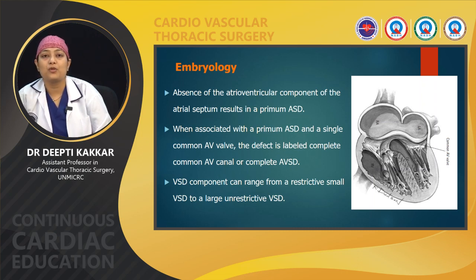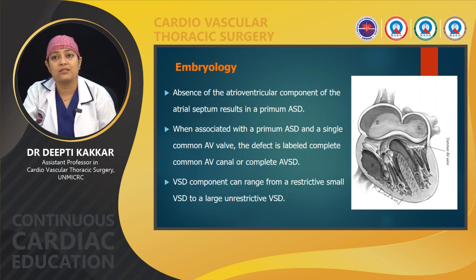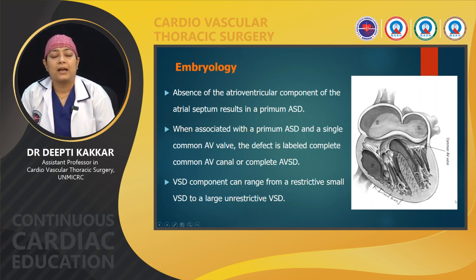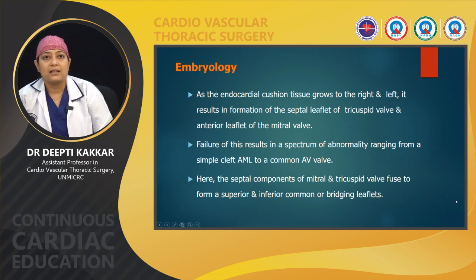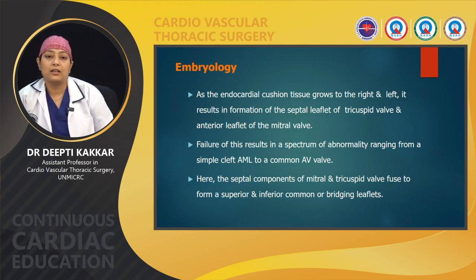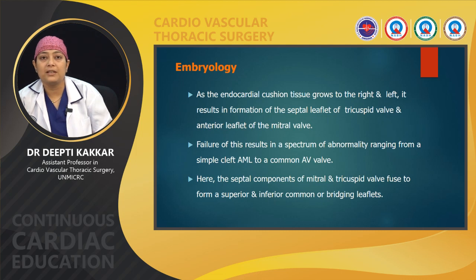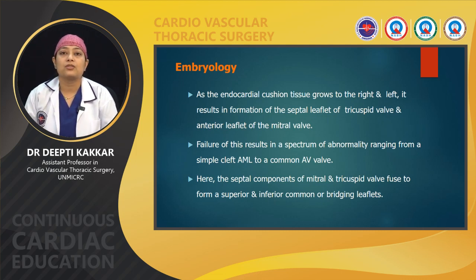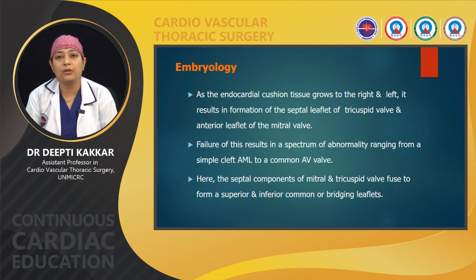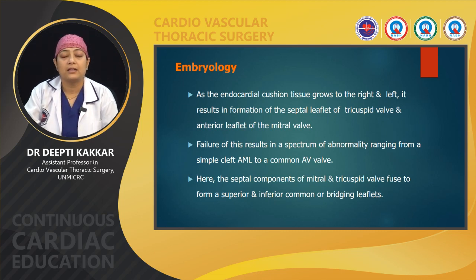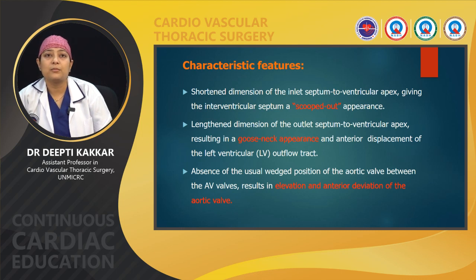The VSD component of AVCD can vary from a small restrictive VSD to a large unrestrictive VSD. As the endocardial cushion grows towards the right and left, it also results in the formation of the right and left AV valve leaflets — the normal tricuspid and mitral leaflets. Failure of this results in a spectrum of abnormality ranging from a simple cleft to a common AV valve. The septal components of the mitral and tricuspid valves fuse to form superior and inferior common or bridging leaflets.